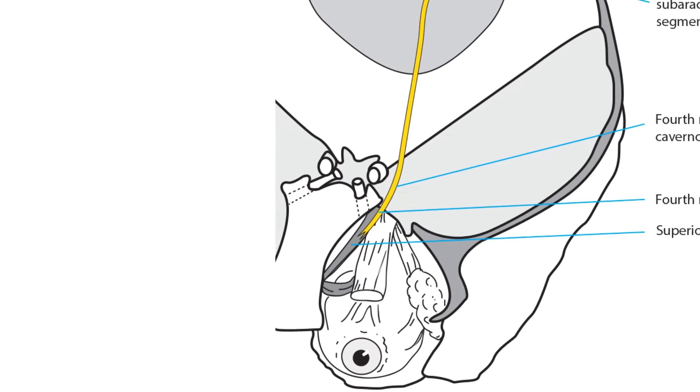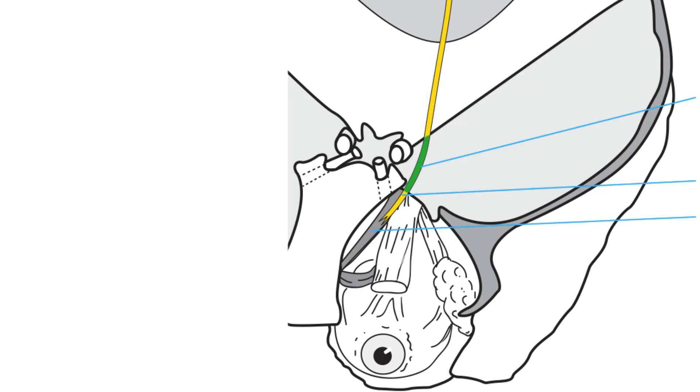The nerve pierces the tentorium to enter the outer wall of the cavernous sinus. It then enters the orbit through the superior orbital fissure but outside the extraocular muscle cone to supply the superior oblique muscle.